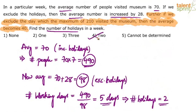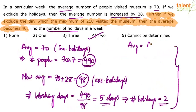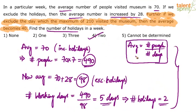The answer is 2, option 4. Don't go by the length of the explanation or all the steps written on paper — these are all mental calculations. 70 + 28 = 98, and all you need to do is divide 490 by 98. When you divide the total by the average, you get the number of days. Total 490 ÷ average 98 = 5 working days, which implies 2 holidays. Option 4 is your answer.